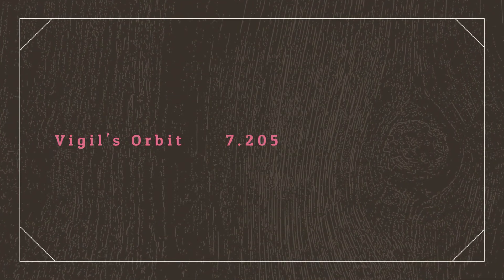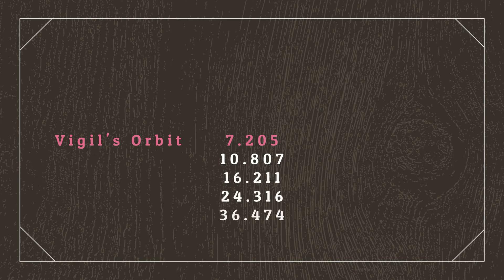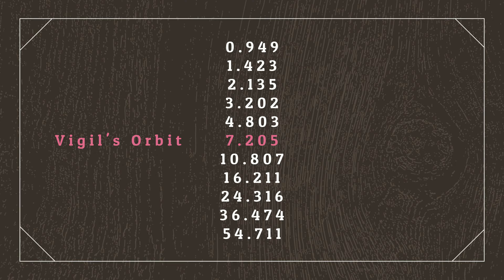Now that we've established our gas giant, we can determine all other stable orbits within the solar system. The equation is very easy. For planets further out than Vigil, we simply take its orbital distance and multiply it by around 1.5, and then we can take that new number and multiply that by 1.5, and so on, until we reach the edge of the solar system. The reverse is true for planets further in than Vigil — we take its orbital distance and divide it by around 1.5, and so on. We can see by doing this that Locusts' orbital distance is reasonably close to the value we've gotten, which means its orbit is likely to be stable.